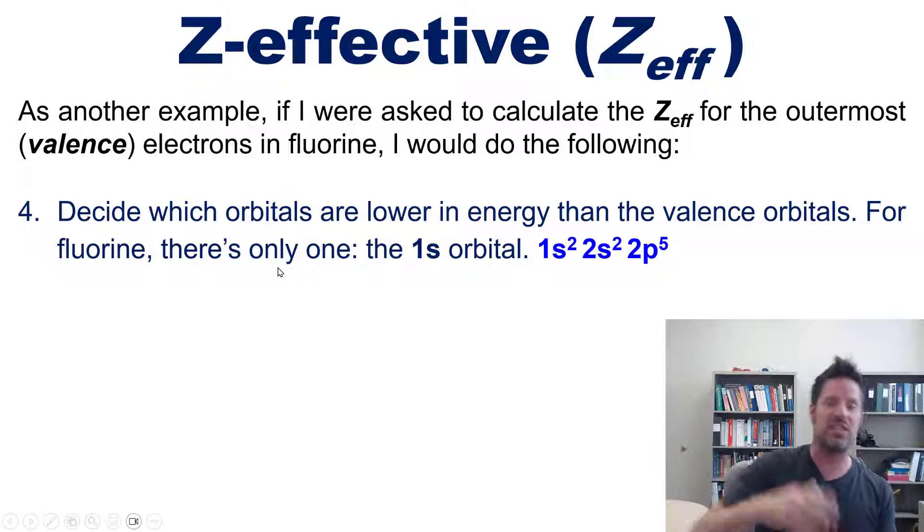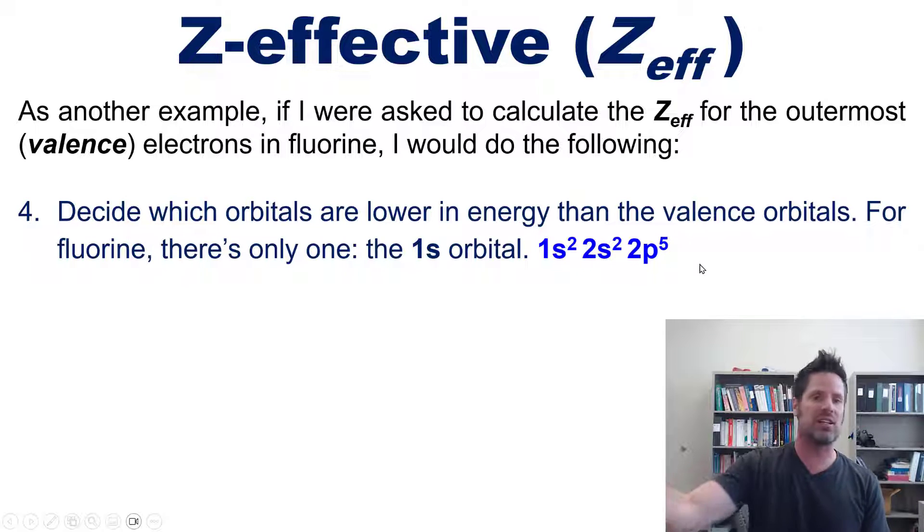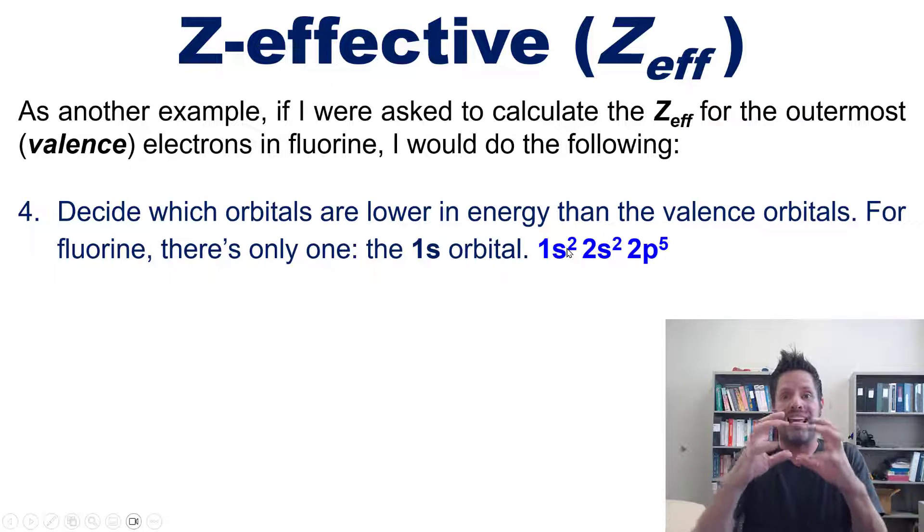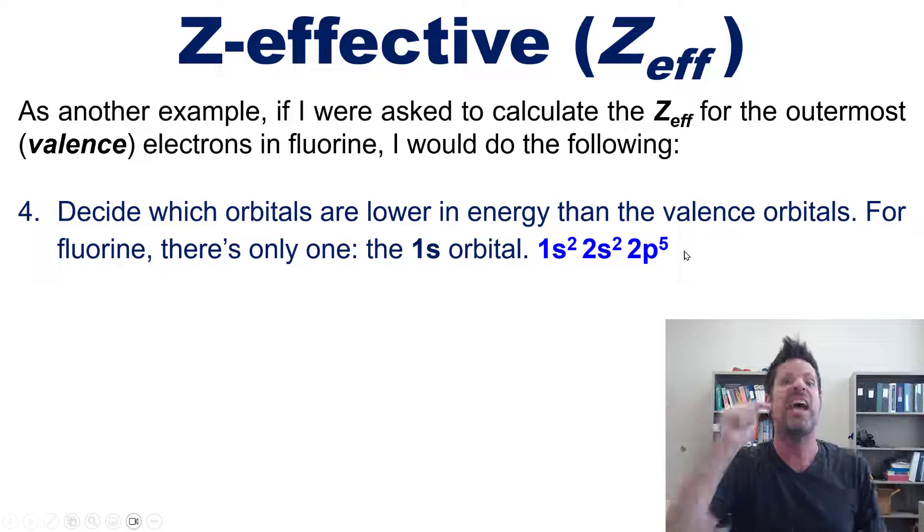Next, I decide which orbitals are lower in energy than the valence orbitals. For fluorine, there's only one lower energy orbital: the 1s orbital. All the electrons in 2s and 2p are valence electrons, and the lower electrons are in this 1s orbital. Those are between the outermost electrons and the nucleus.